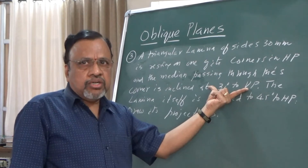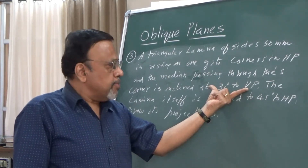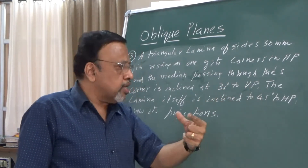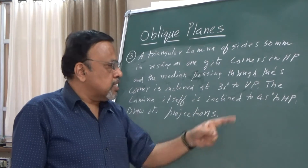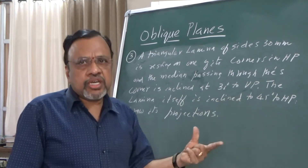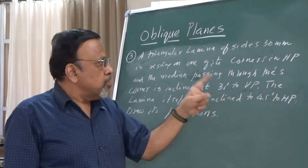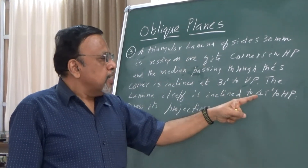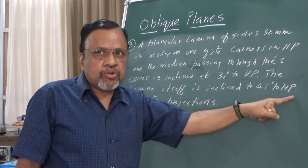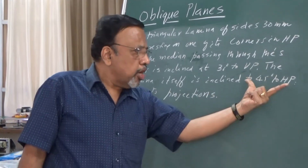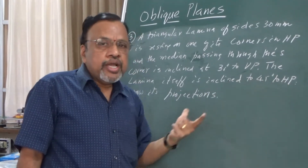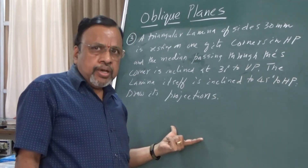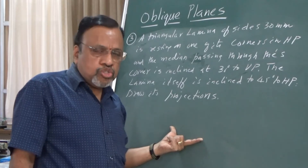As usual, we need to satisfy the surface inclination first. The surface of this particular triangular lamina is inclined at 40 degrees to HP. Since it is inclined to HP, initially assume the lamina to be parallel to HP.